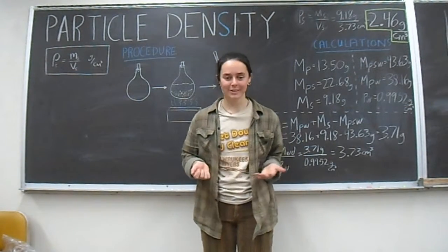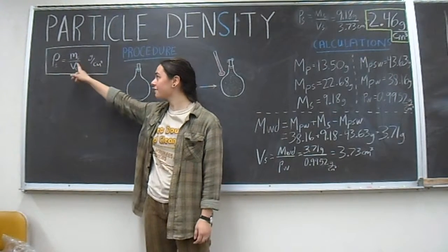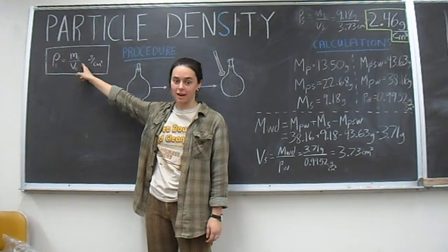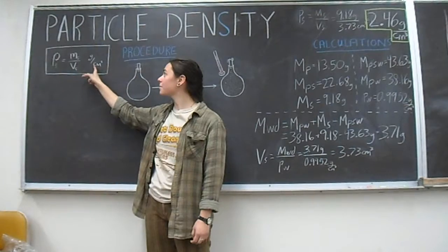In essence, particle density is measured as the dry mass of the solids divided by the volume of the solids, and units for this are grams per cubic centimeter.